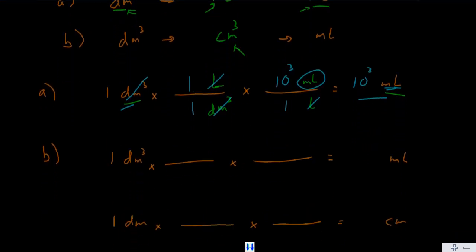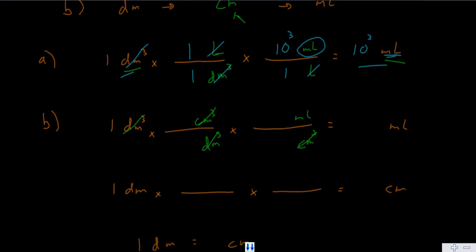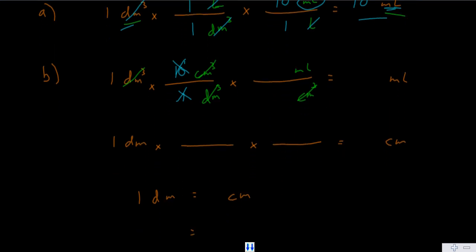We're going to go from decimeter cubed into centimeter cubed. Decimeters cancel out, getting us into centimeter cubed, and from centimeter cubed we can go into milliliters. Now, what is the relationship between decimeter cubed and centimeter cubed? You might think that since centimeters are about 10 times smaller than decimeters, it's 10 centimeters cubed per decimeter cubed. Wrong — this is not correct, because we're dealing with cubic units. To determine the relationship, we first need to find it between regular decimeters and regular centimeters.